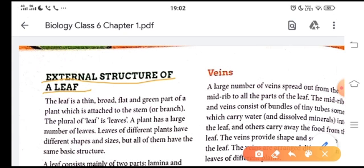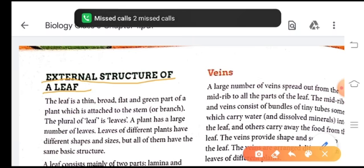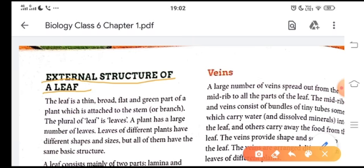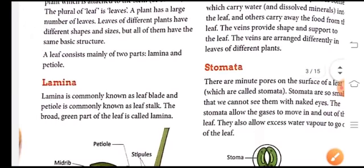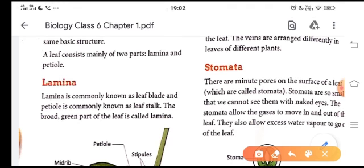Now come to the external structure of leaf. Children, you must have seen various shapes and size of leaf. Basically all the leaves have a common structure. They are thin, broad and green in color. They have the stem which makes the leaf attached to the main stem of the plant. So a leaf consists of two main parts: the lamina and the petiole.